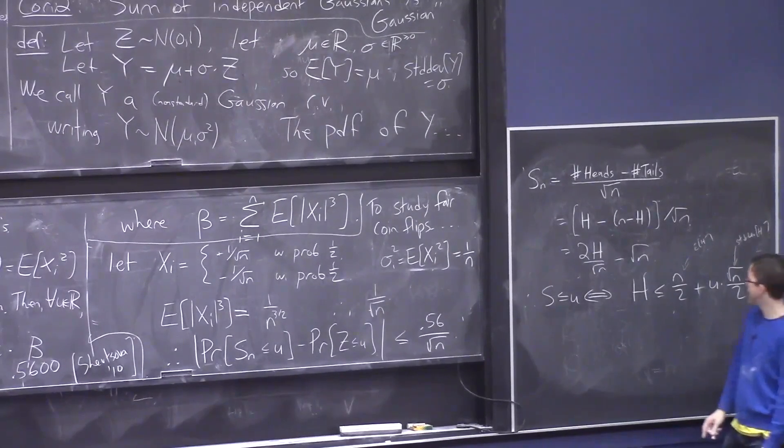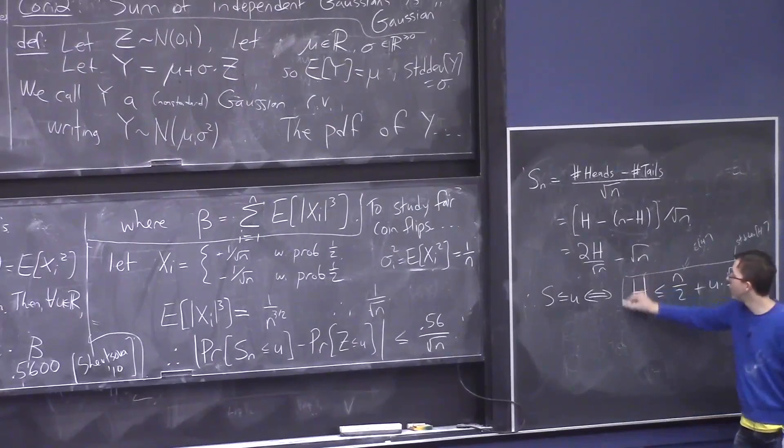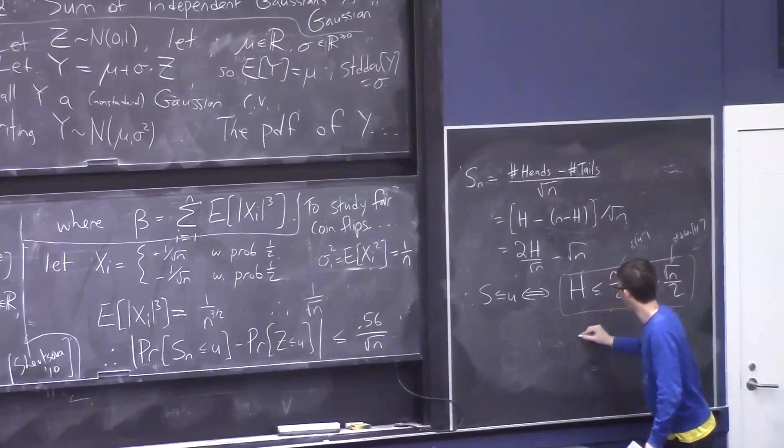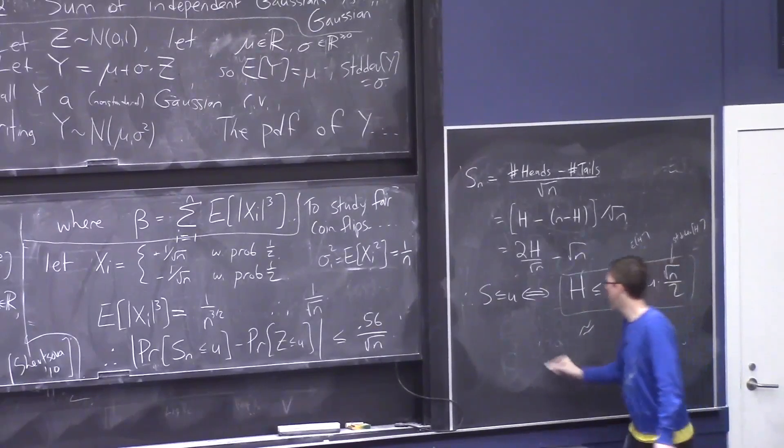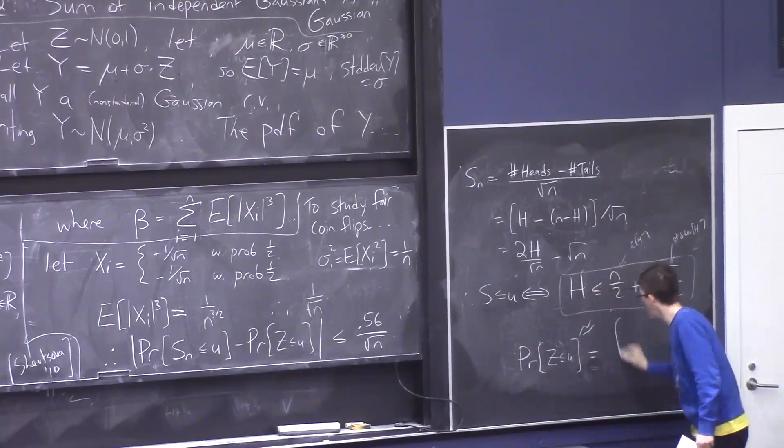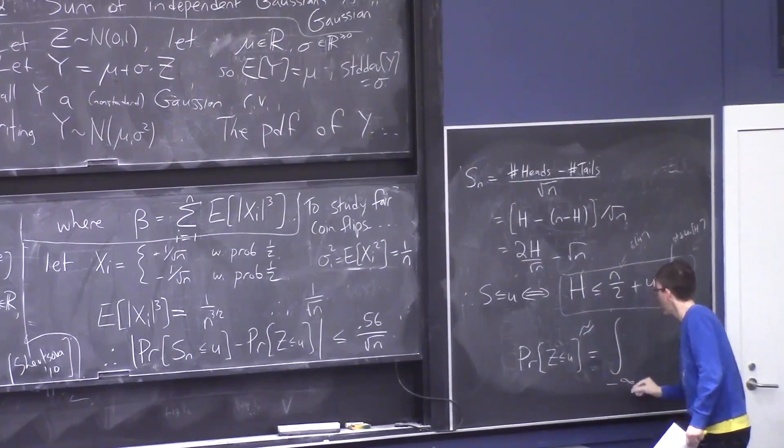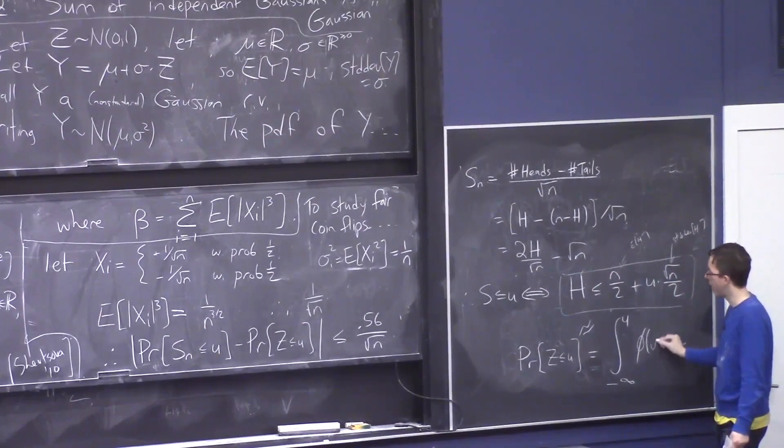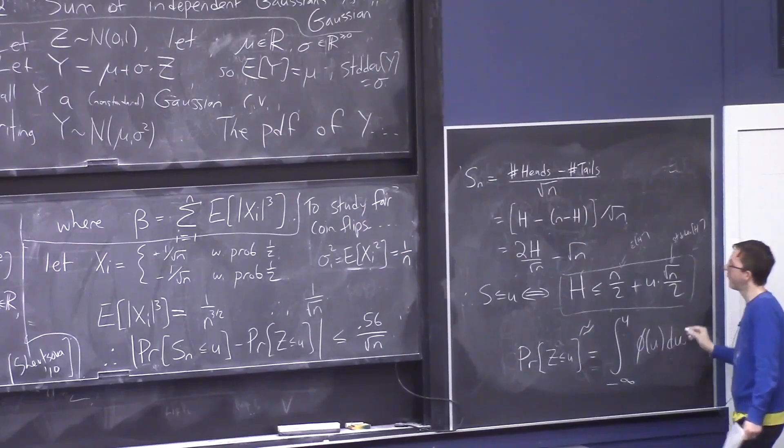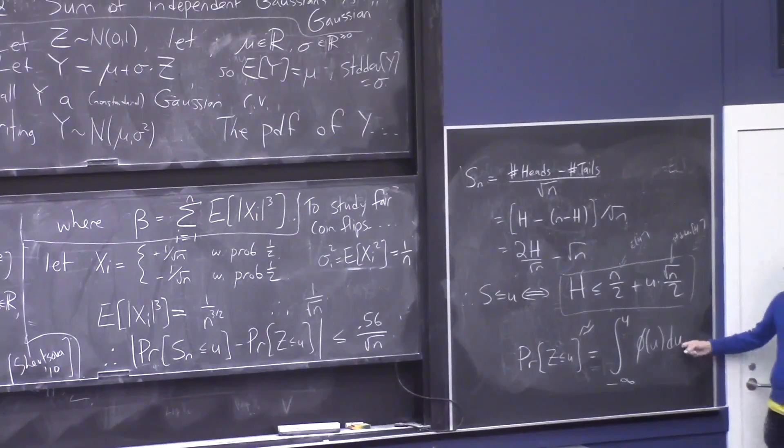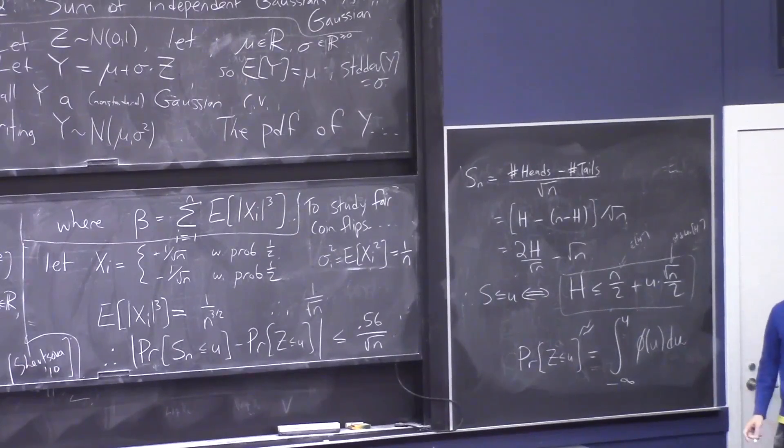Okay, so if you flip n coins, the probability of this is very close to the probability that a Gaussian is at most u, which is some numerical thing. It's the integral from minus infinity to u of this e to the minus u squared thing, the PDF. And you get these numbers using, like, your computer calculator. Computer, I guess. Yep? For example, for Sᵢ, do they have to be identically distributed? No, they don't even have to be identically distributed.